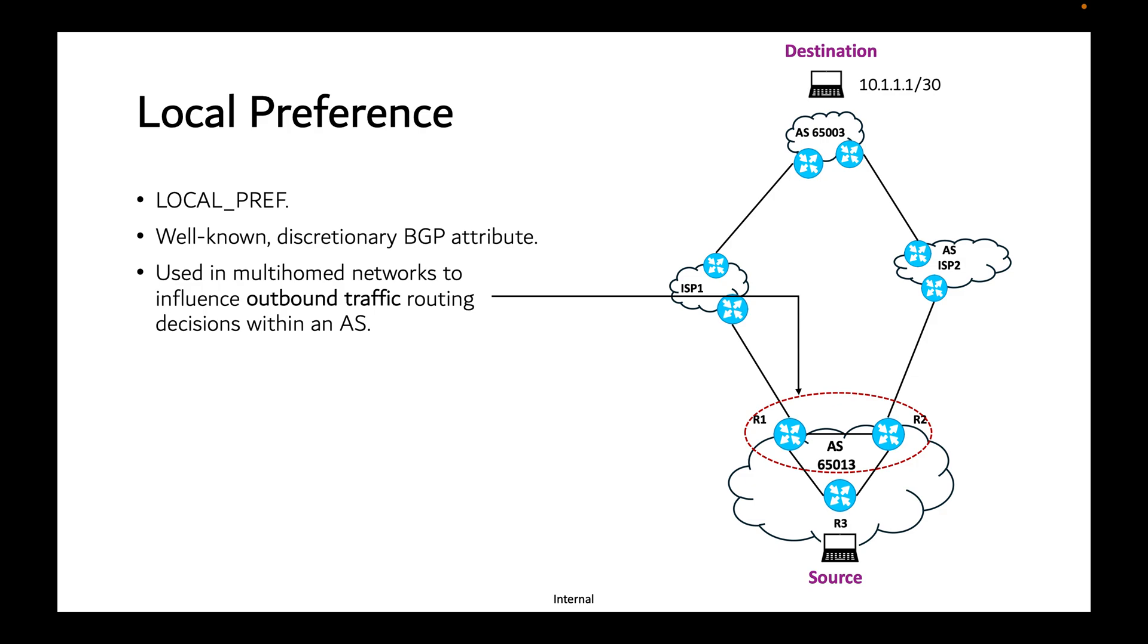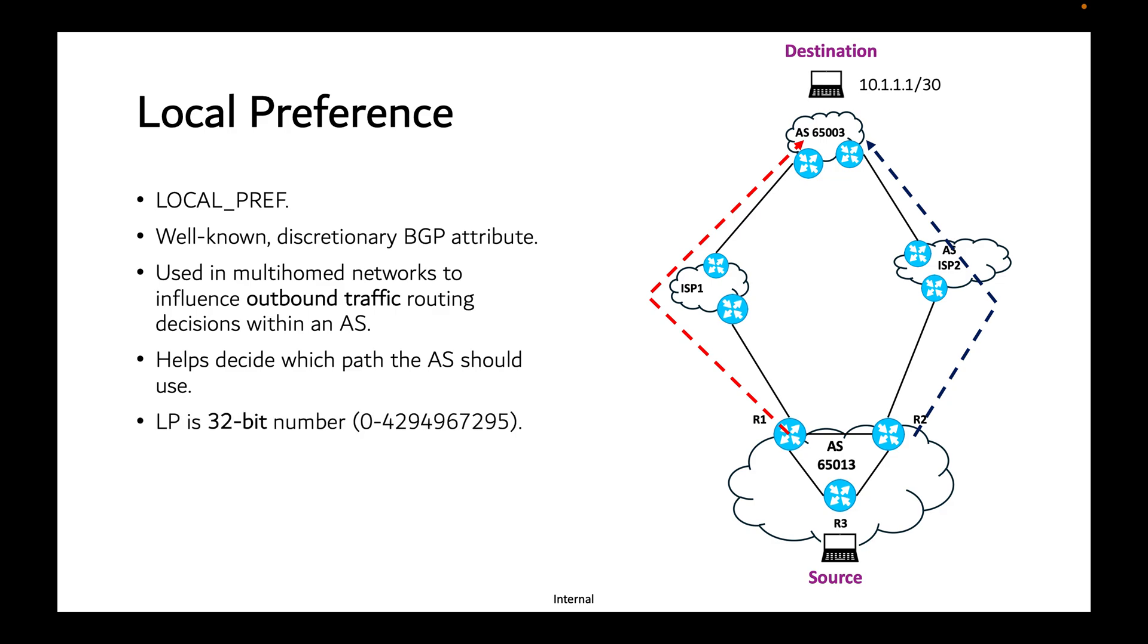It helps decide which path the AS should use when there are multiple exit points to reach a particular destination. Local preference is represented using a 32-bit number and can range from 0 to 4,294,967,295.